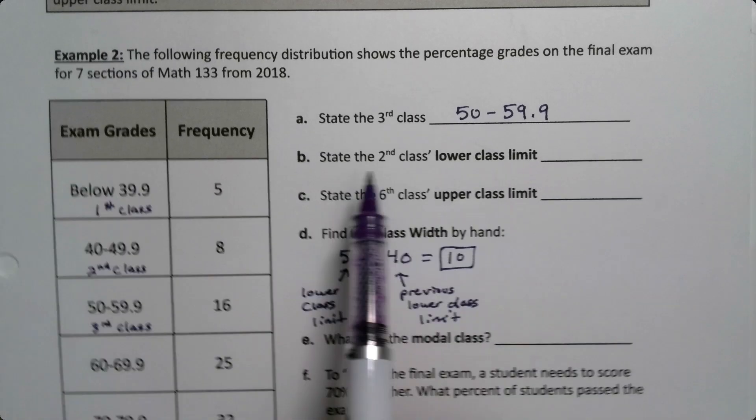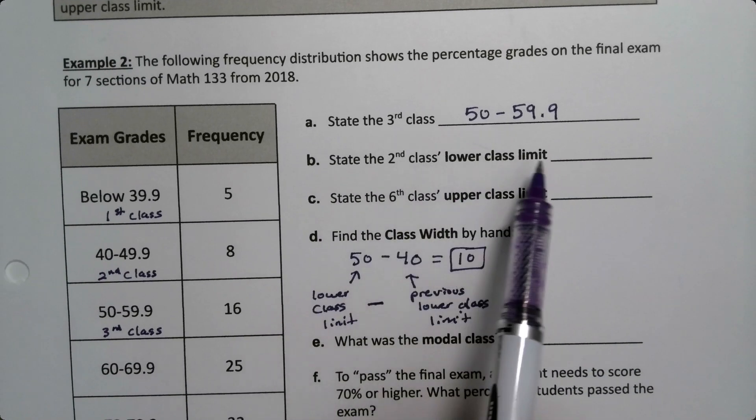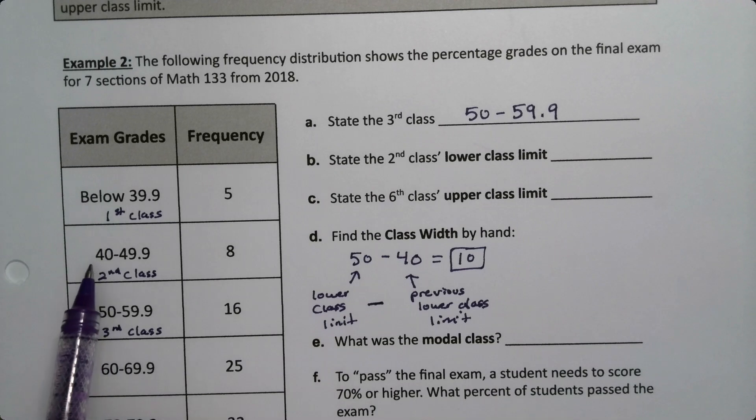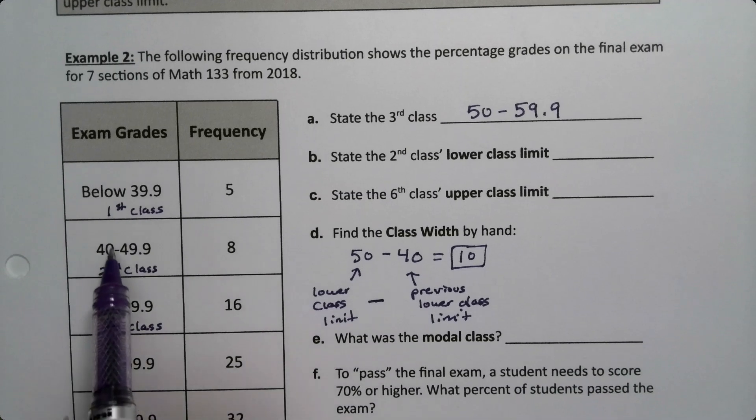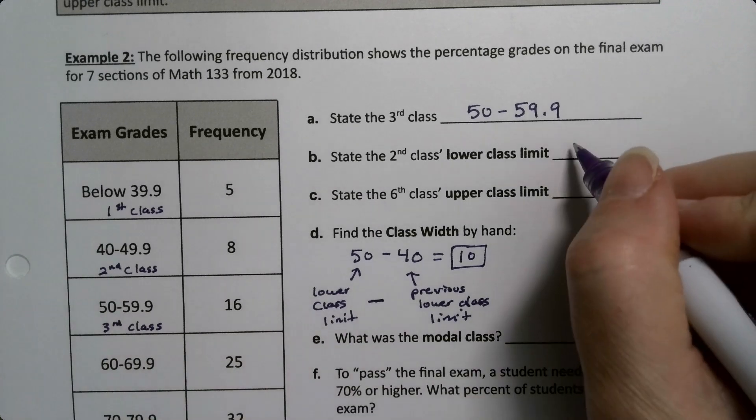Now let's state the second class's lower class limit. The second class was right here, 40 to 49.9. The lower class limit is 40. That's the lowest number included in that class. So 40.